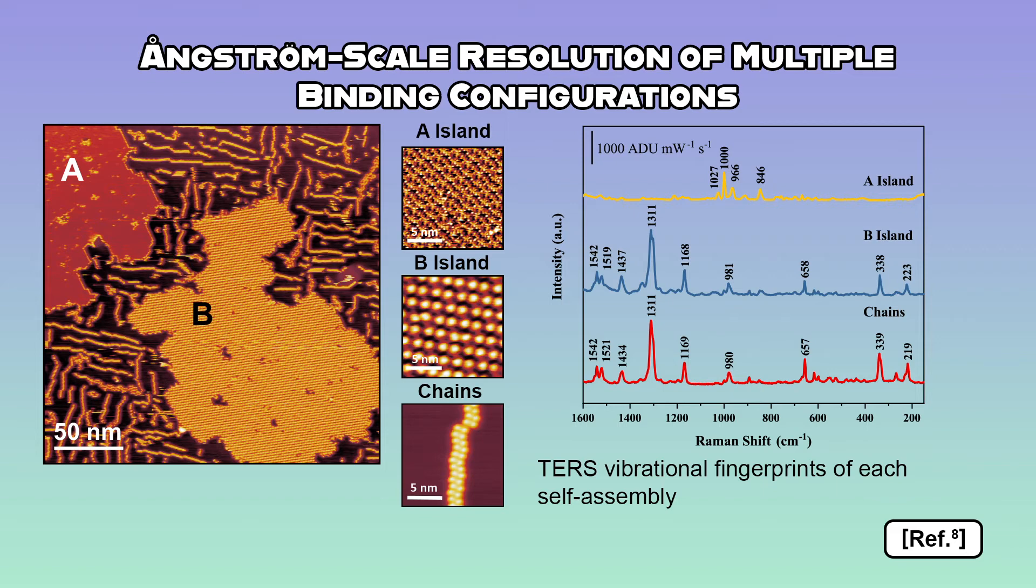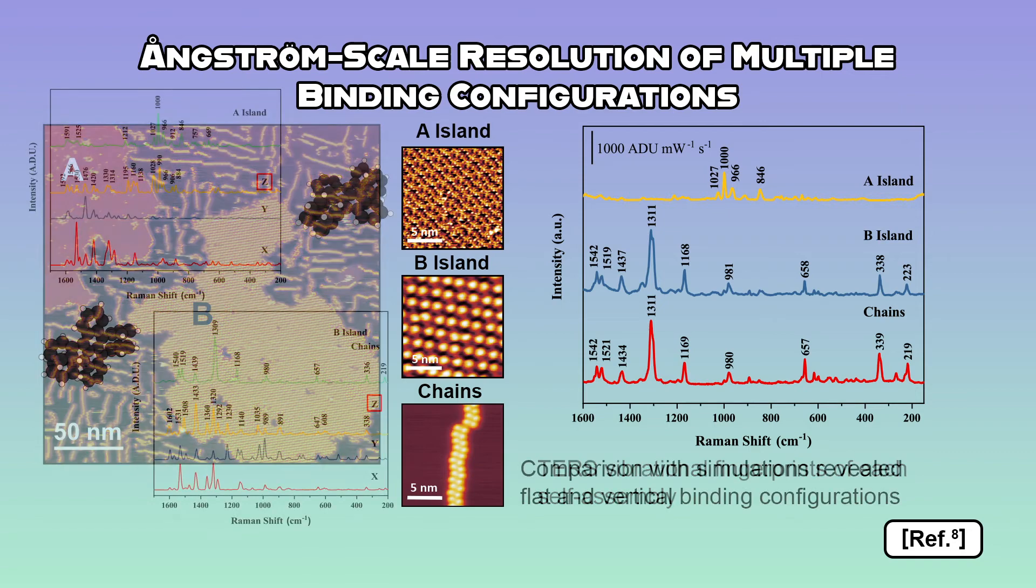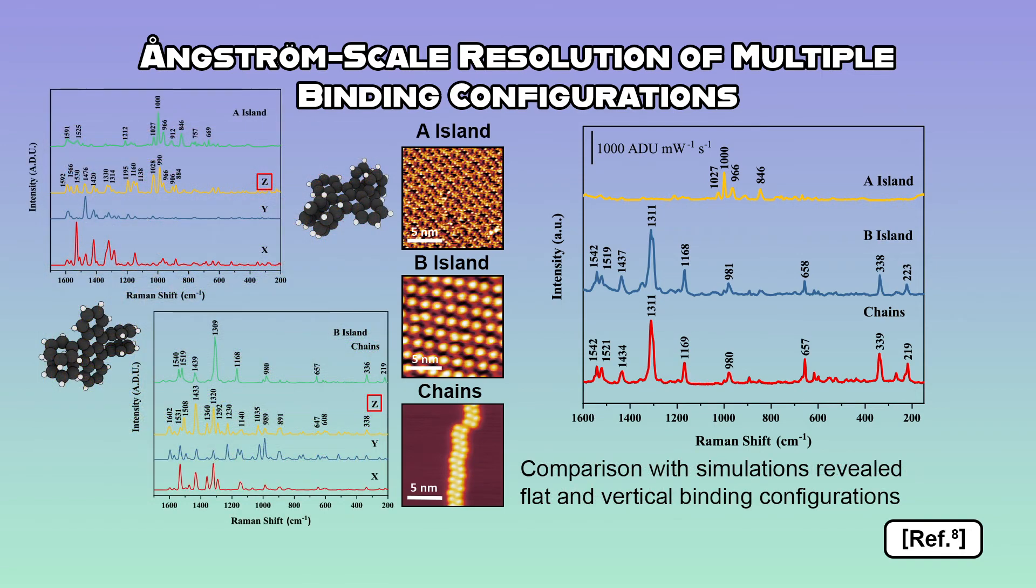By comparing TERS vibrational fingerprints with DFT simulations, we uncovered that these three self-assemblies were composed of two types of molecular binding conformations with angstrom-scale resolution. Rubrene was found to adsorb either with the tetracene backbone perpendicular to the substrate, or with a flat orientation where the tetracene backbone lies parallel with the surface.